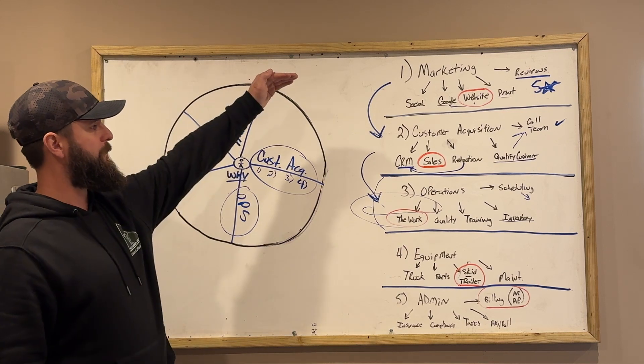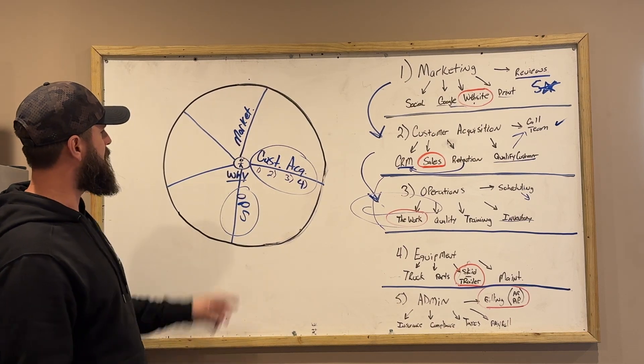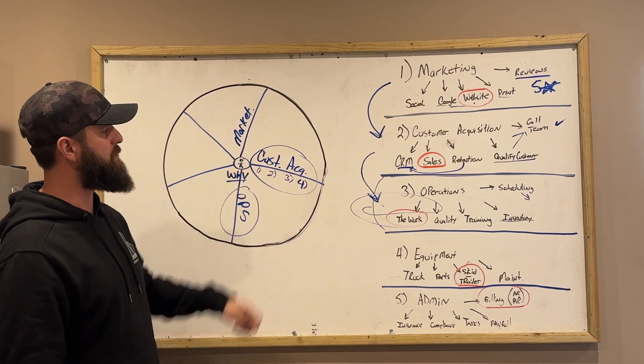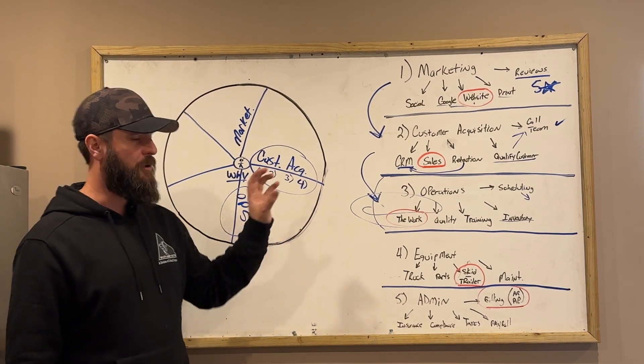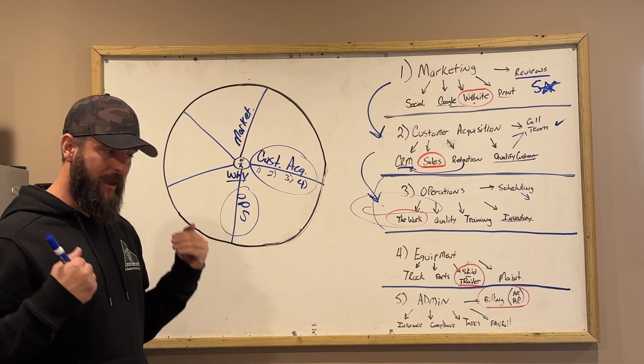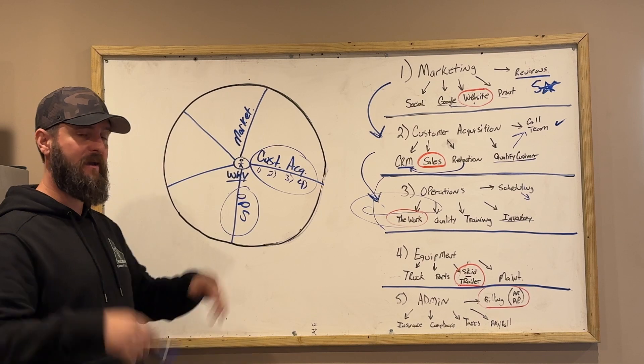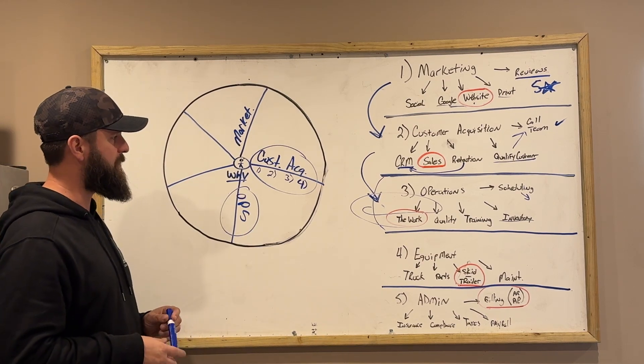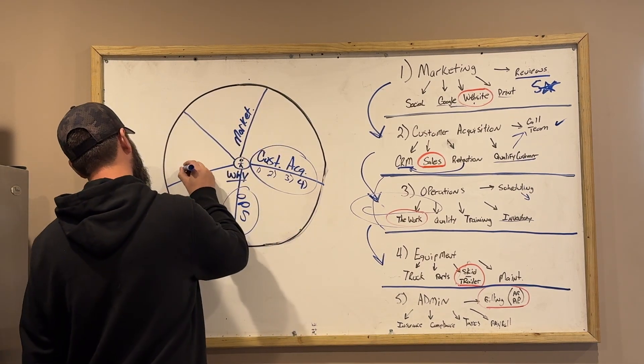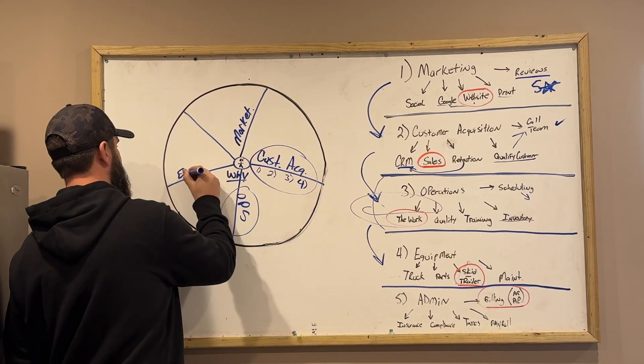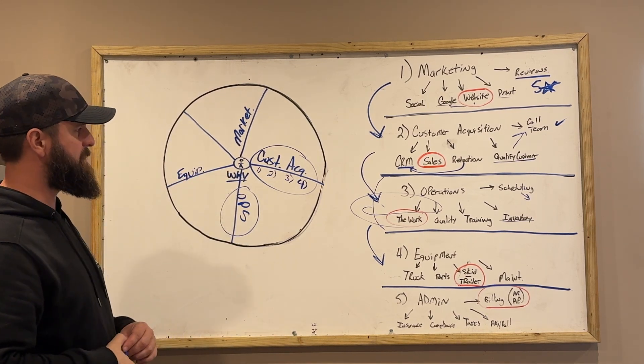We've looked at in the previous videos, if you haven't seen those: marketing, number two customer acquisition - these are the spokes in our wheel, they're supporting the business. Customer acquisition and all the little details inside that. Number three was operations, all the things that go into actually going out and getting the job done correctly and taking care of the customer. Number four we're going to get into equipment, and this is my favorite because we build equipment.